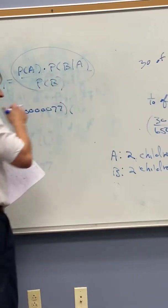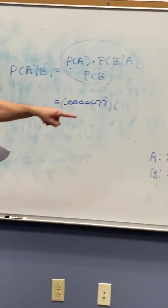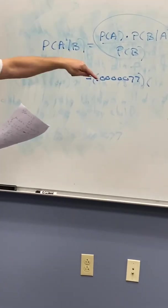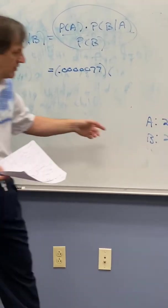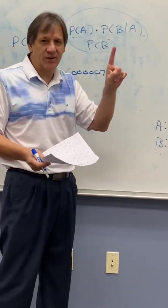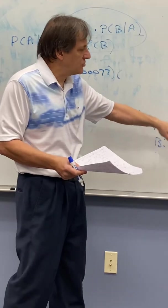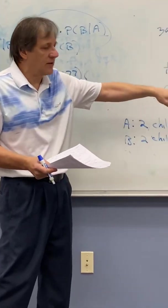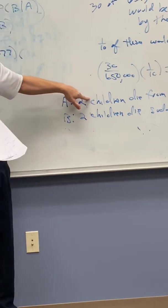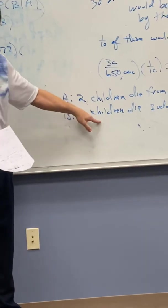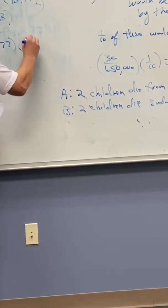Probability of B given A. What's the probability that two children die suddenly and unexpectedly given that they die from SIDS? Well, this is trivial. Why do I say it's trivial? Because it has to be 100%. Think about what this says: the probability that two children die suddenly and unexpectedly given that they die from SIDS. Well, if you're given that they die from SIDS, then they certainly died suddenly and unexpectedly. So this is one.